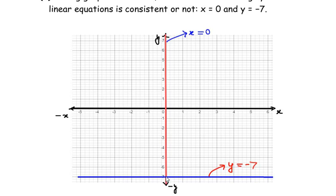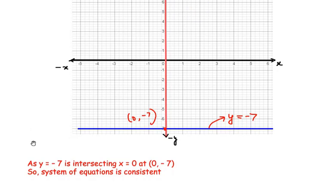And y=-7 is the horizontal line over here. Since these two lines intersect at the point x=0, y=-7 (that is 0, -7), it is going to be a consistent equation or consistent lines.